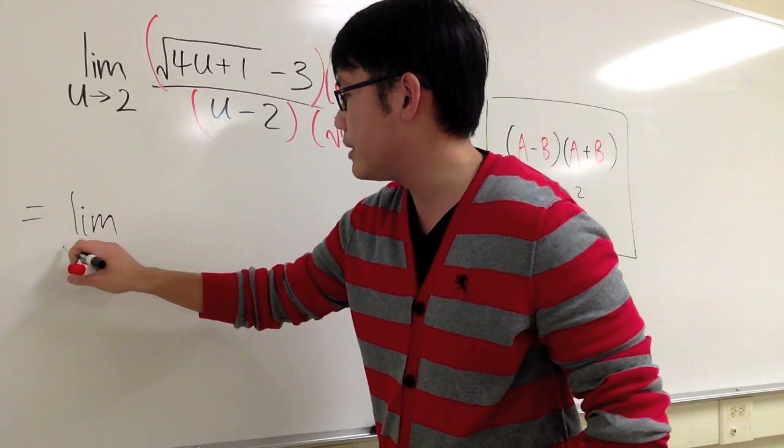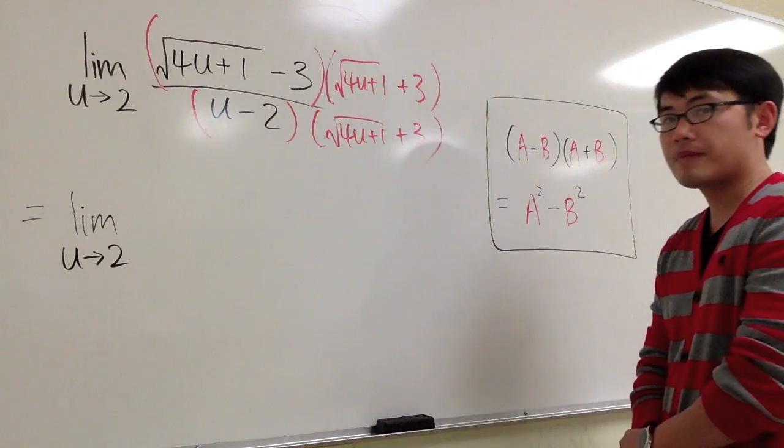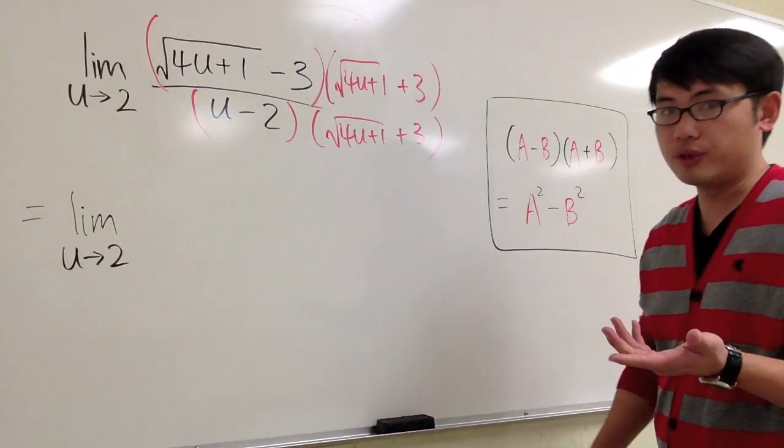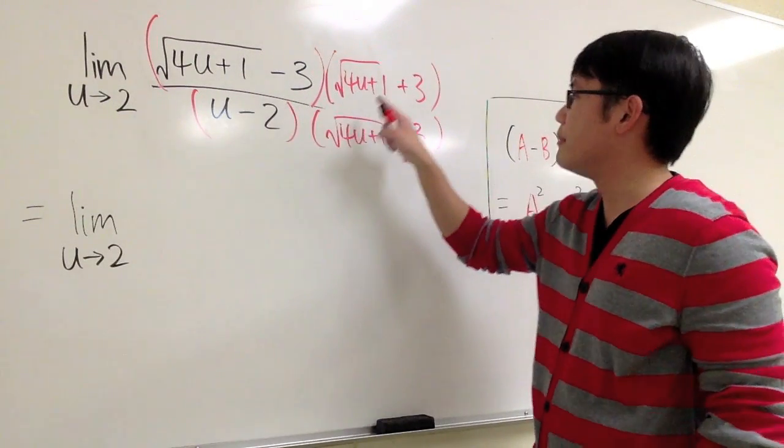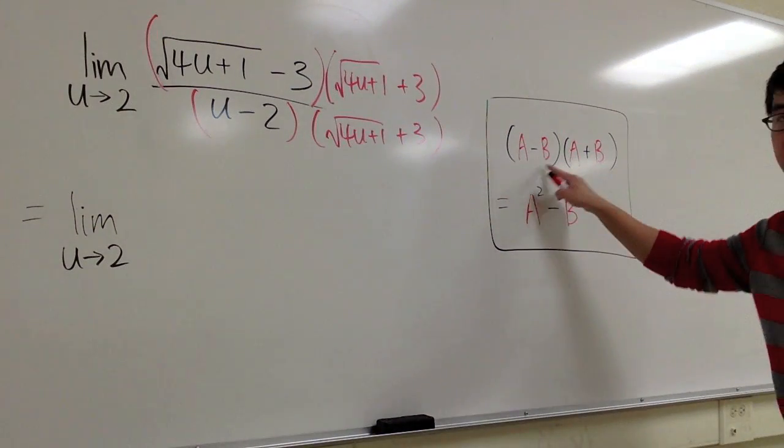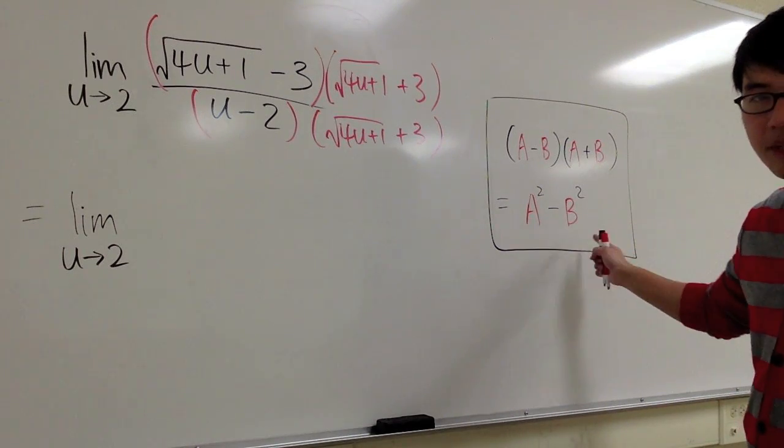Let me write down the limit when u approaches 2. When you're multiplying the conjugate, we can use this as a pretty good shortcut, because this is in the form of a minus b times a plus b. We know that a minus b times a plus b will give us a squared minus b squared. We can use this shortcut.